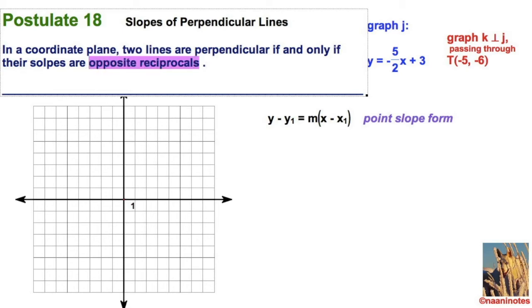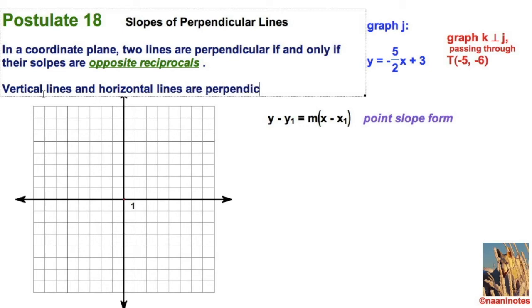I really want to highlight that - opposite reciprocals. Furthermore, vertical lines and horizontal lines are perpendicular to each other. Just like the last time, there's this funky exception and that has to do with the vertical and horizontal lines. Let's get to town on this one. Let's graph this one, then we'll talk about this whole opposite reciprocal business.